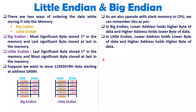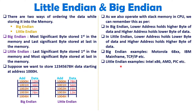That is how we store data with these different techniques. Big Endian is used with Motorola and IBM mainframe. It is also used with the TCP/IP protocol. Little Endian is used with many processors of Intel, as well as with AMD and PIC.